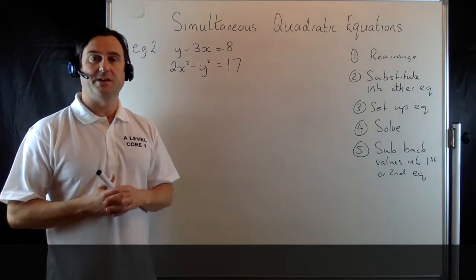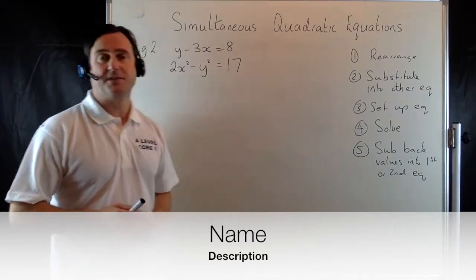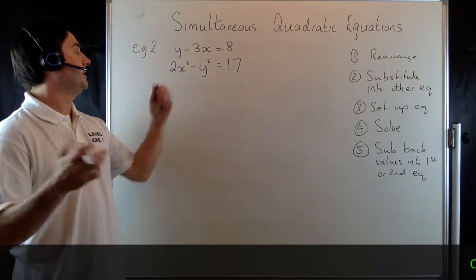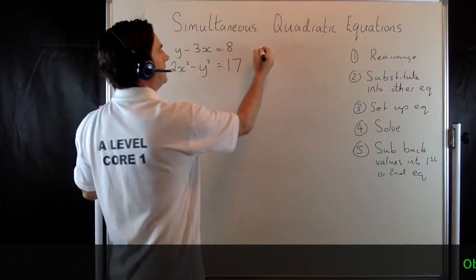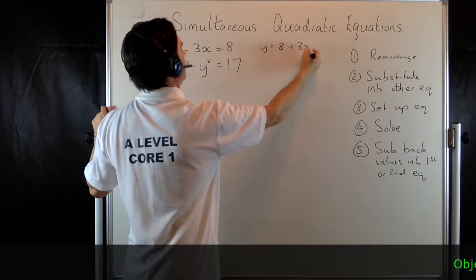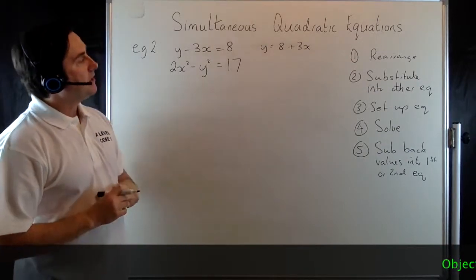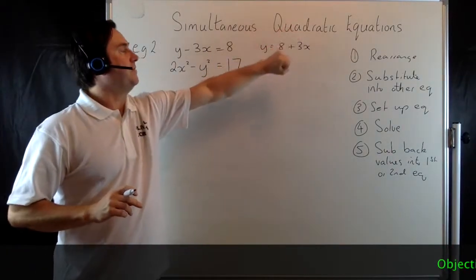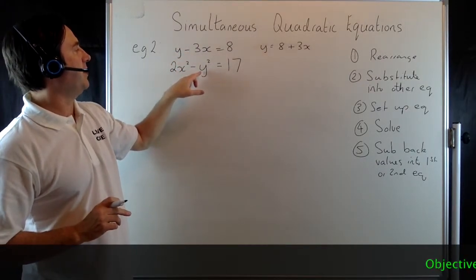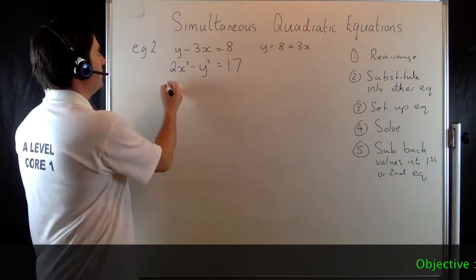Let's move on and have a look at the second one. This one's slightly more complicated than question 1, so we're going to use the same procedure — we've got our five steps. Step 1: we're going to rearrange. This time I'm going to make y the subject, so y is going to equal 8 plus 3x — I take the negative 3x over and it becomes a positive 3x. I'm then going to substitute this expression into the second equation, so I'm going to replace the y with 8 plus 3x.